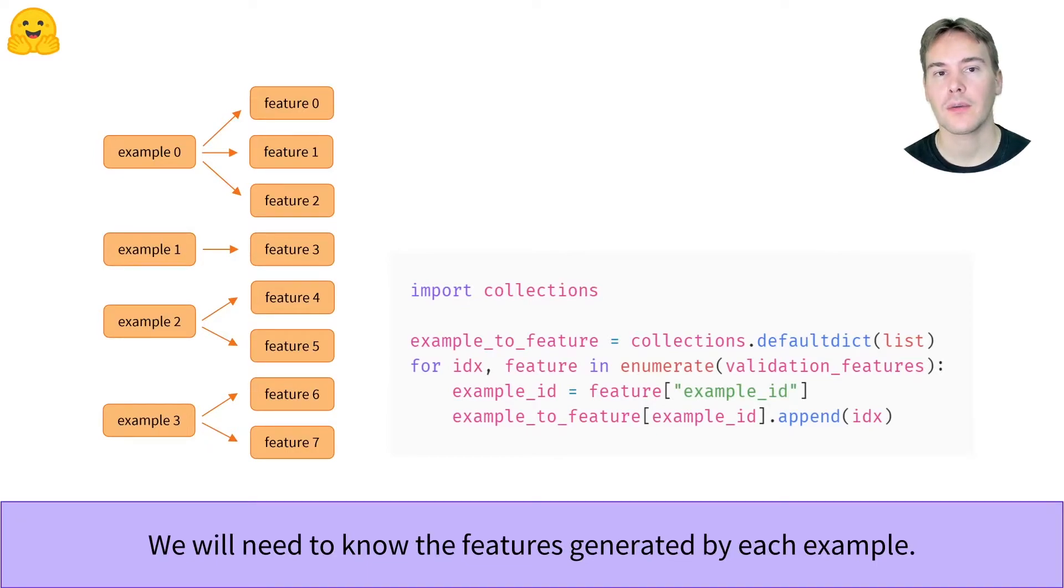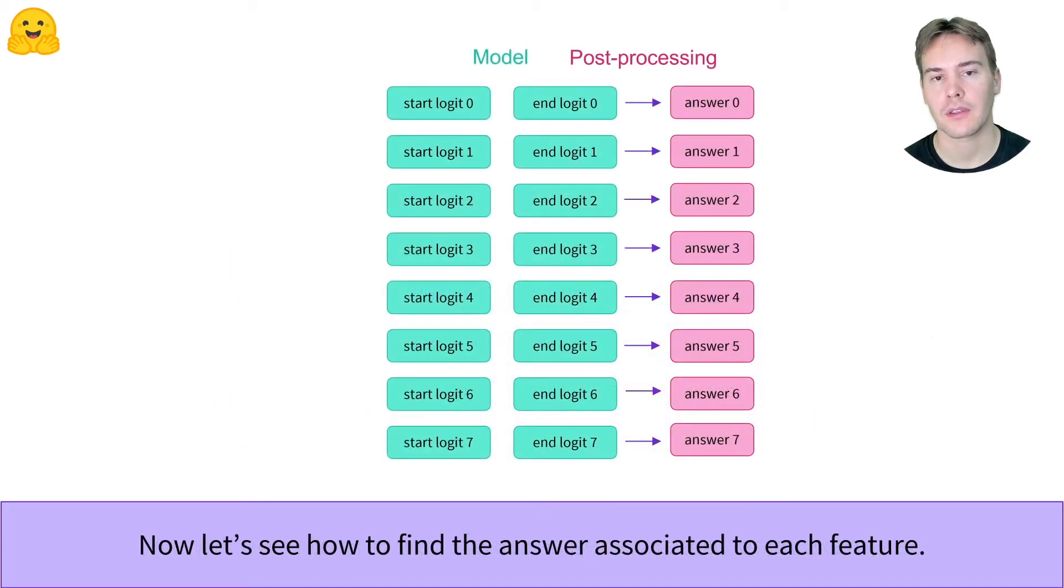First, we'll need a map from example to features, which we can create like this. Now for the main part of the post-processing, let's see how to extract an answer from the logits.